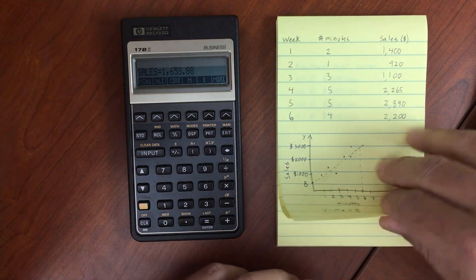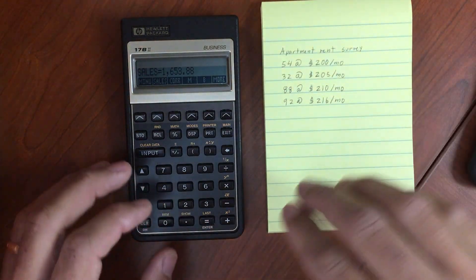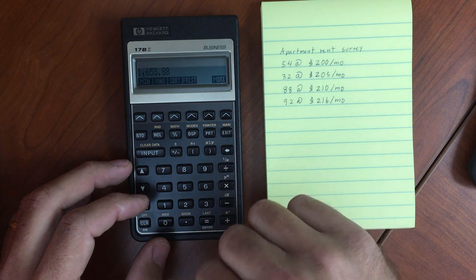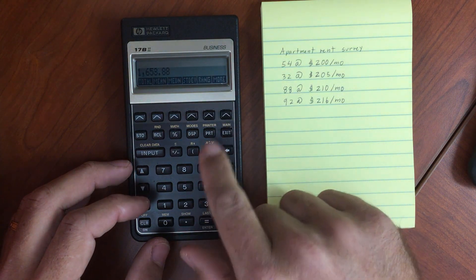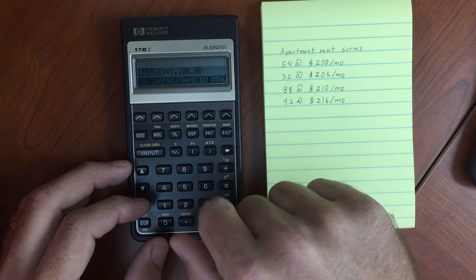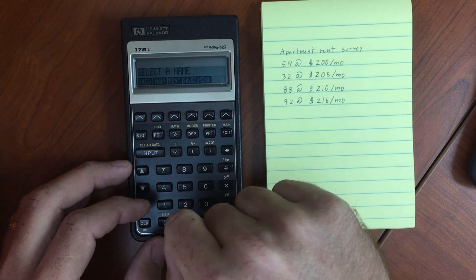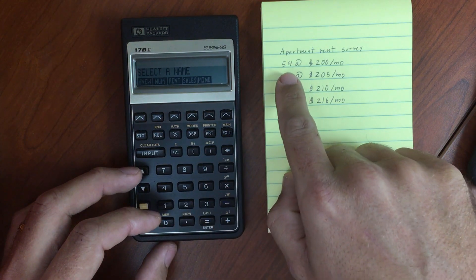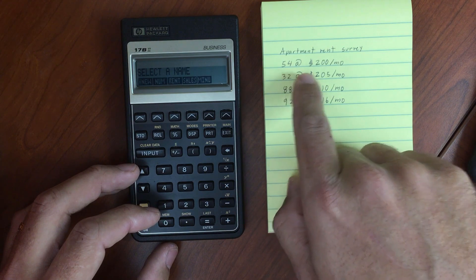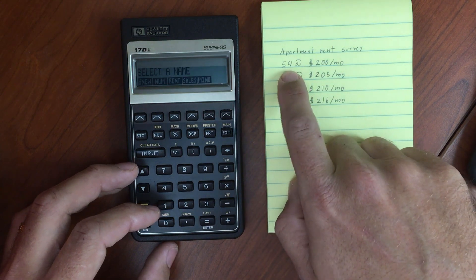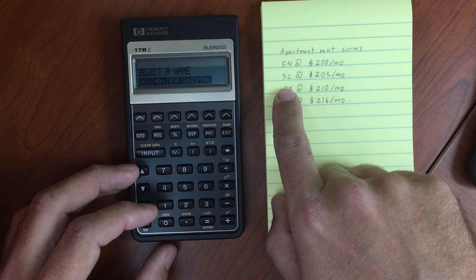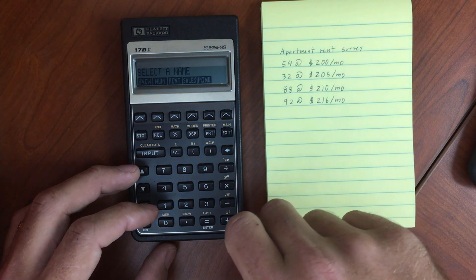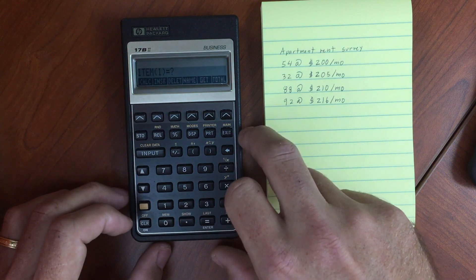Now I've got one other example here. So this is weighted statistics. So let's go back out to our menu. And now we are going to get a couple of other lists that I've created the names for. So we have the number. So that's 54. These are apartment rents. So there are 54 apartments at $200 a month, 32 at $205 a month, 88 at $210 a month, and 92 at $216 a month.